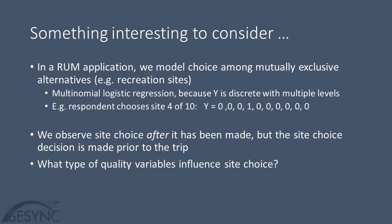Let's revisit random utility modeling from yesterday. It's a site choice model — a close cousin of travel cost modeling. We collect data from where people went, alternative sites they could have gone to, and quality variables at each site, and then we model the site choice decision. We're collecting data after the trip has already taken place, but modeling how they made that choice. This is a multinomial logit regression application where the Y variable is discrete zeros and ones with multiple levels.